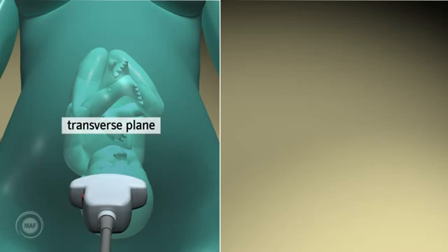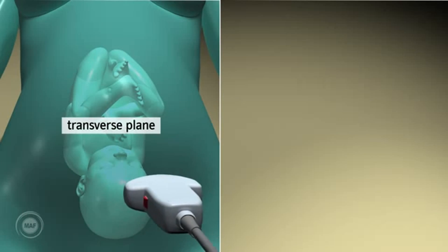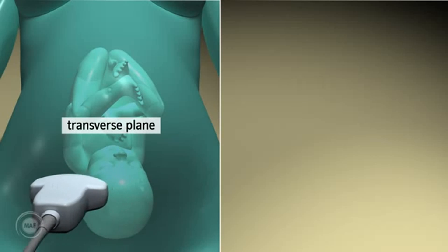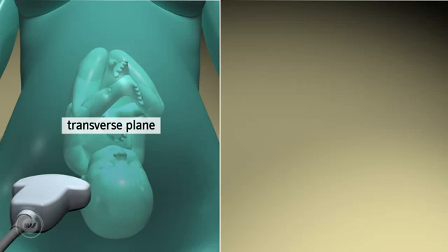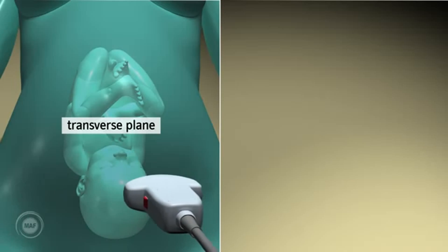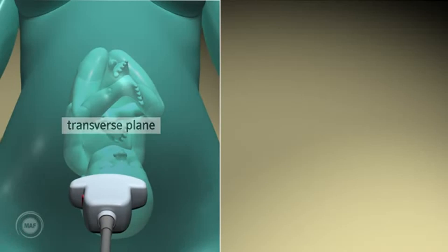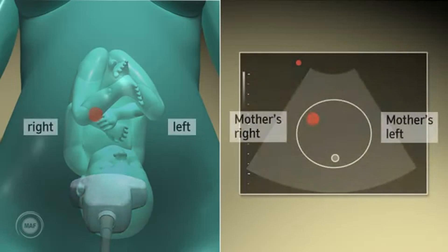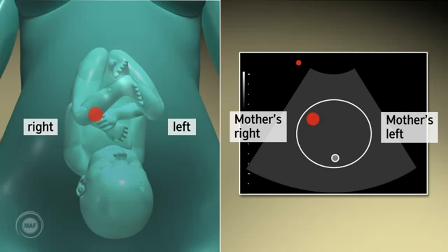When scanning in the transverse plane, the image on screen is like a mirror image. The left side of the mother is represented on the right side of the screen and the right side of the mother is represented on the left side of the screen. Again, the location of the dot on the screen should correspond.